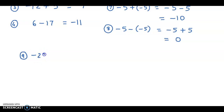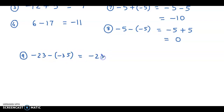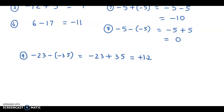Next example: minus 23 minus of minus 35. Again you have minus next to another minus sign, so this would become plus. So you have minus 23 plus 35. We have opposite integers, so we take the difference. The difference of 23 and 35 is 12, and 35 is the greater value, so we put the positive sign. The answer is positive 12.